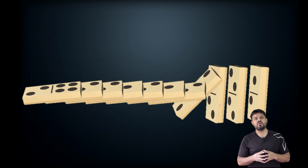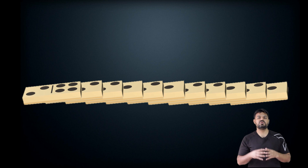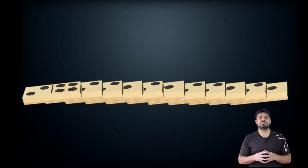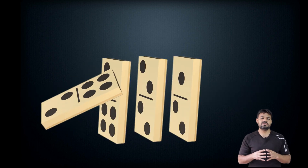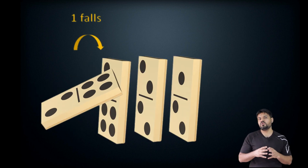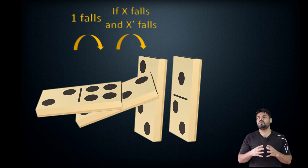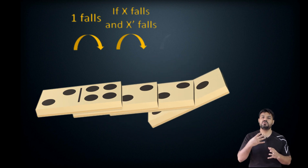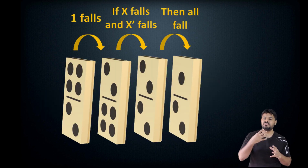A classical way of looking at this is through dominoes. Imagine the first domino falls, and whenever the x-th domino falls so does the successor of that domino — then we can see that all dominoes will fall. X here can be seen as any domino, and the successor of x would be the next domino in line.